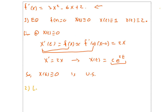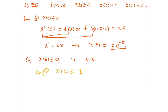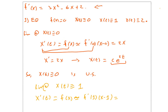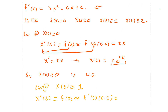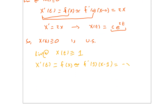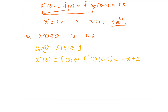Now we're going to linearize at the equilibrium solution X of t identically equal to 1. If X is a solution to the differential equation, X prime of t is always equal to f of X. If in addition X of t is close to 1, this is approximately equal to f prime of 1 times X minus 1. Plugging in 1: 3 minus 6 plus 2 equals minus 1, so f prime of 1 is minus 1.